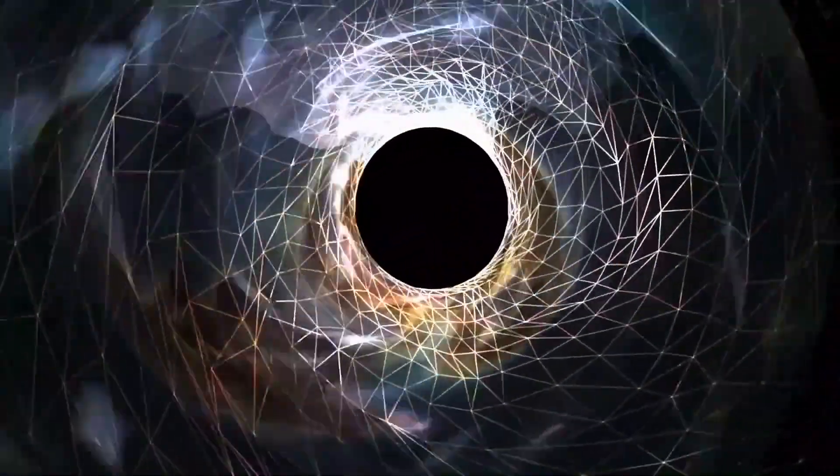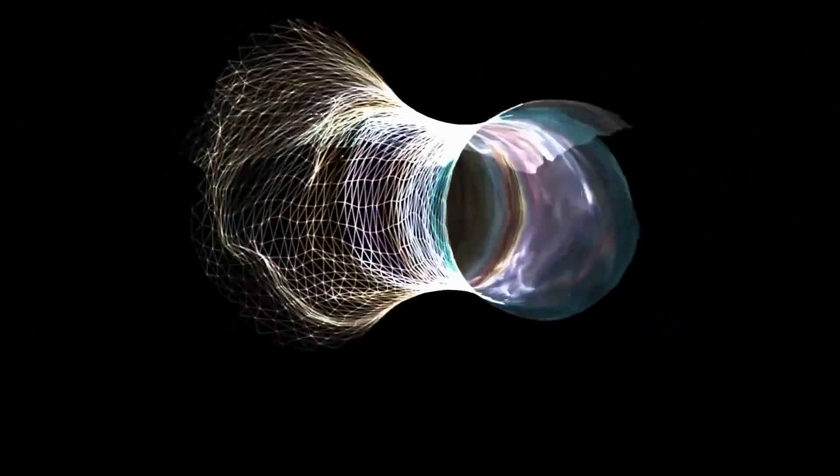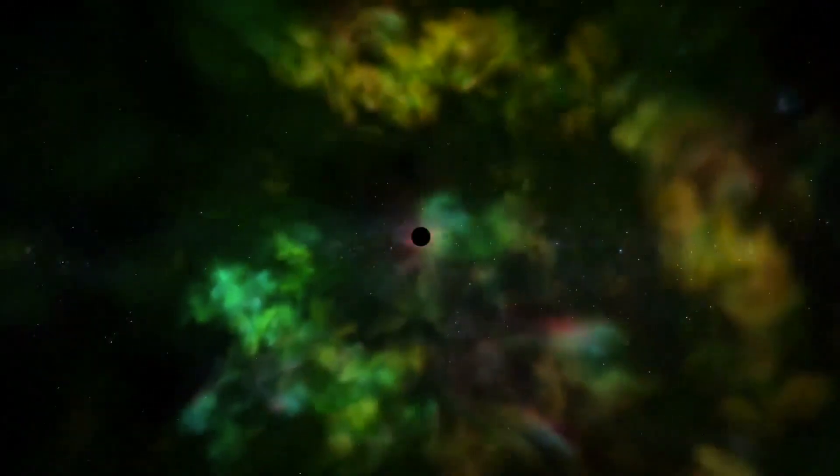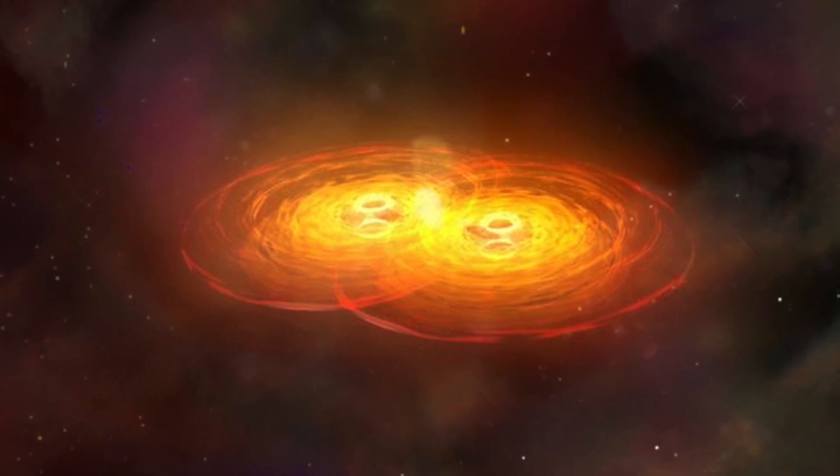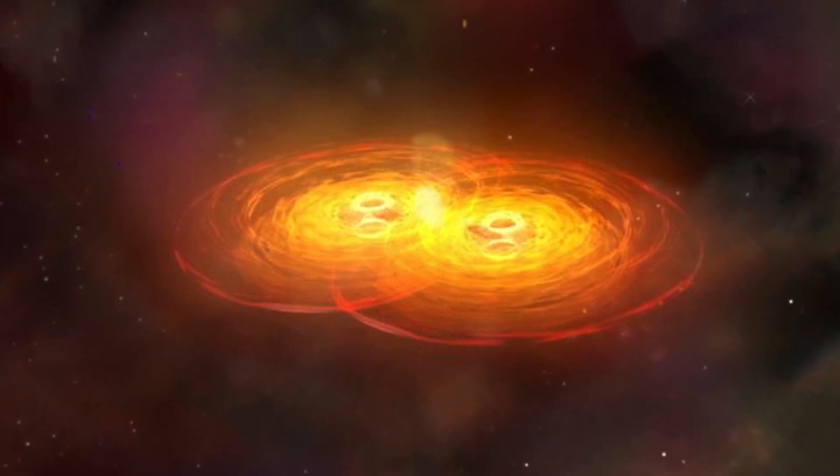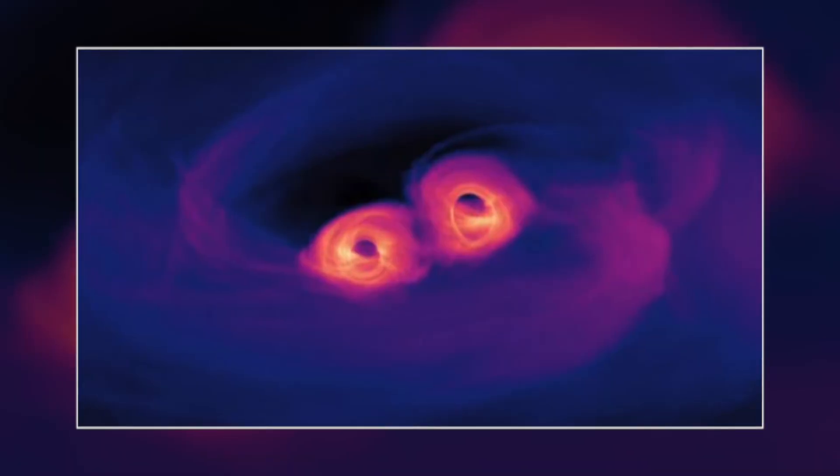Not so long ago, the idea of photographing a black hole was as quixotic as photographing a unicorn. Now, scientists have not one, but two images of two different supermassive black holes. And they both look magical, like flaming donuts.